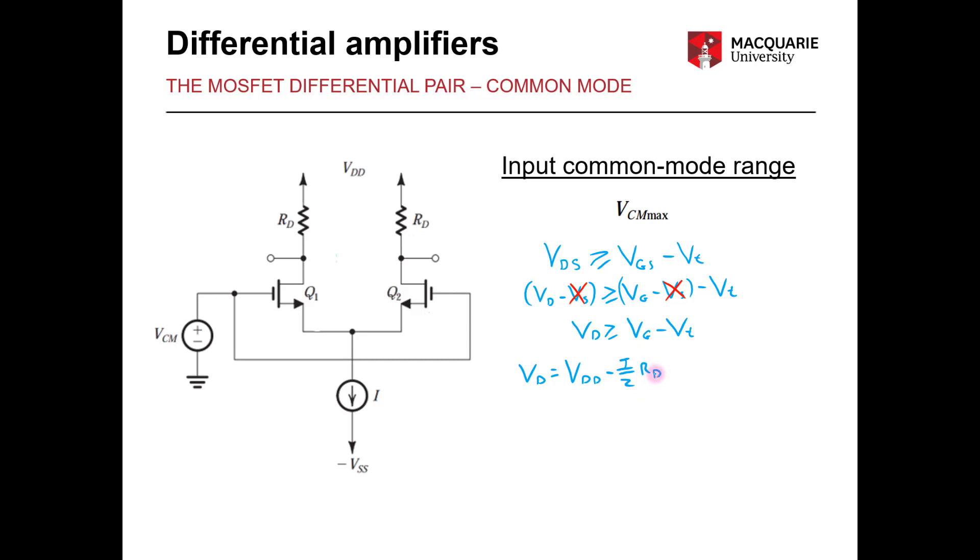And we also know that VG is equal to VCM as this is directly connected to the gate. So that means we can now write our expression in terms of VDD, RD, and VCM.